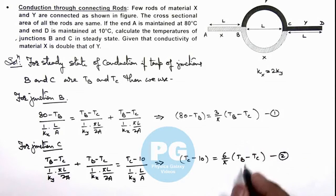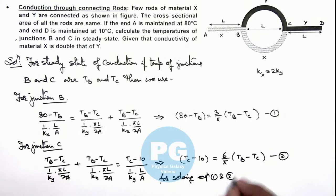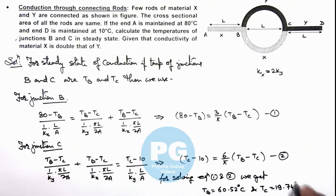If we solve these two equations, which I am leaving as an exercise for you, for solving equations 1 and 2, here we get, we can directly write down the results, the value of TB will get is 60.52 degrees centigrade and TC will get 19.74 degrees centigrade, which are the results of this problem.